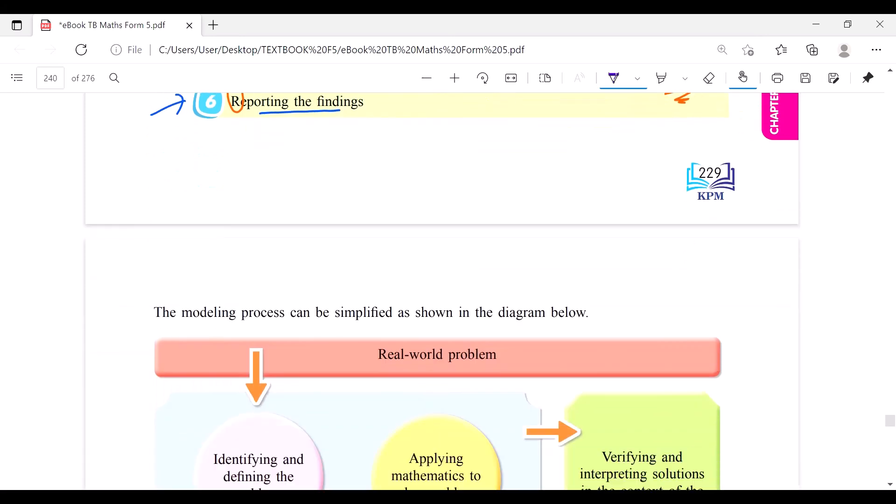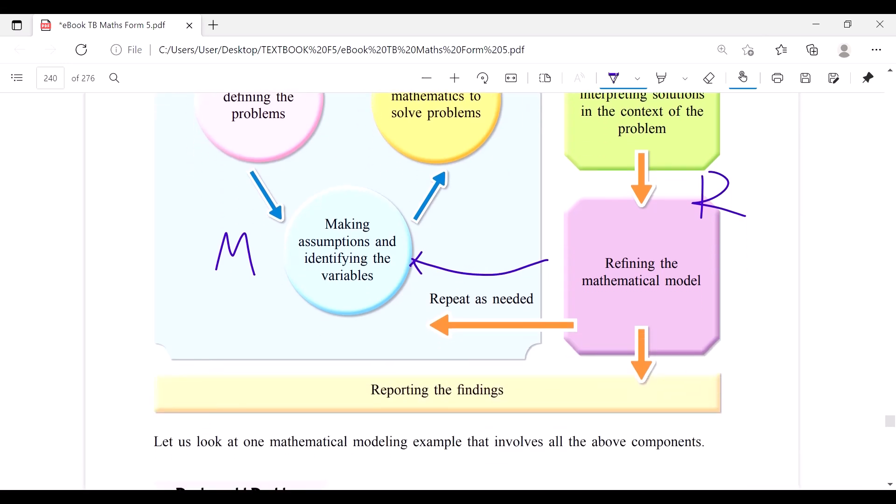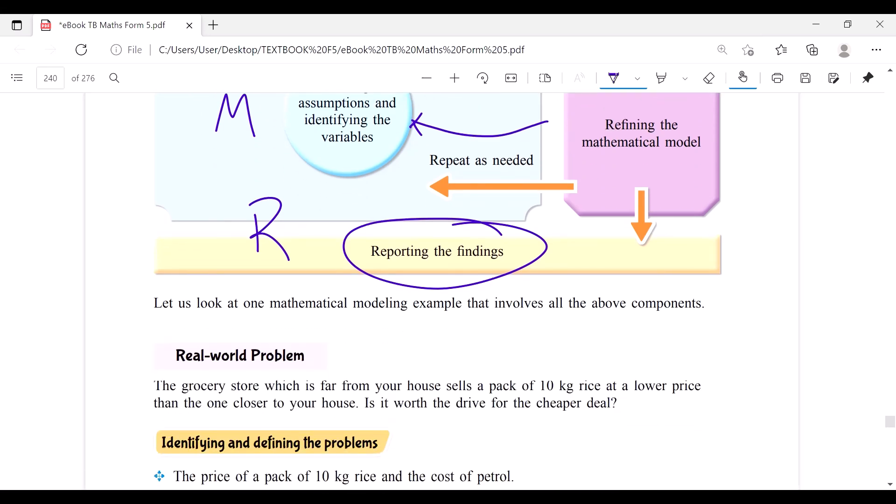Let's have a look. The process you can simplify it by this one. You identify, and then you make assumptions and identify the variables, and then you apply mathematics to solve the problems. You verify and interpret solutions, and after that you refine, and you can repeat as needed before you report. That's a view, a short view about mathematical modeling.